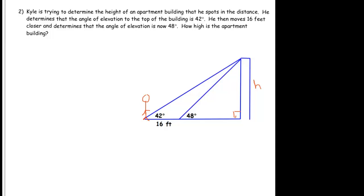The way we did it before was kind of complex — it actually involved a system of equations. We're not going to do that here. What we're going to notice is that if only we knew this side here, we'll call this C, this problem would be easy, because then we could just say that the sine of 48 degrees is equal to H over C.